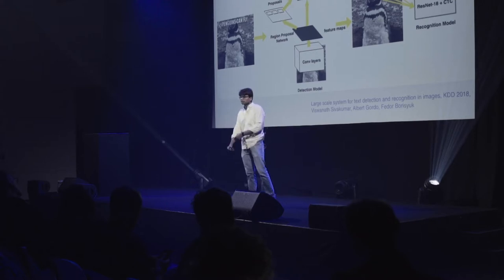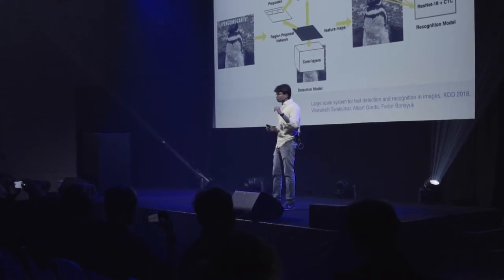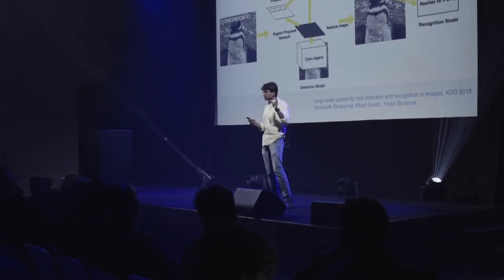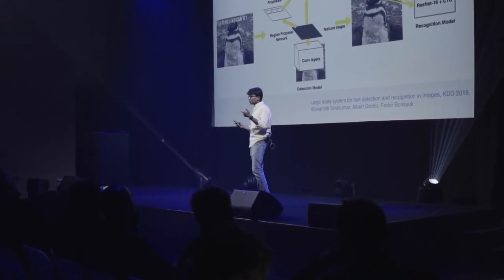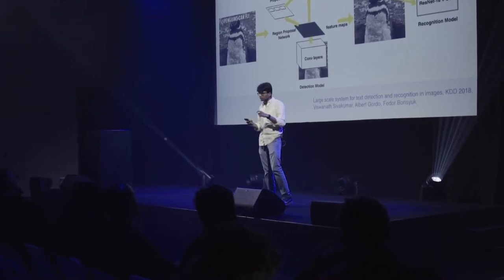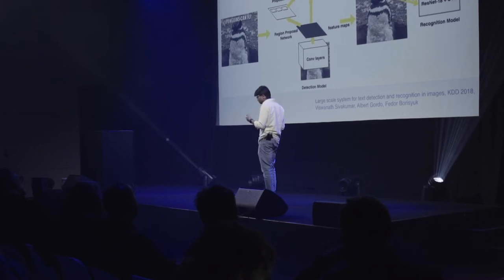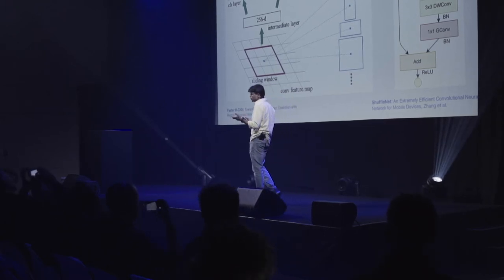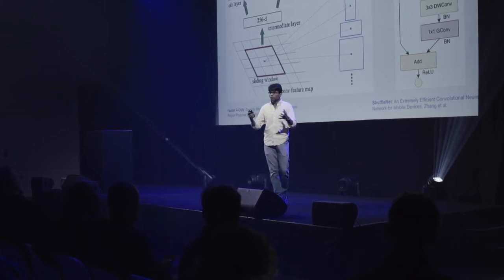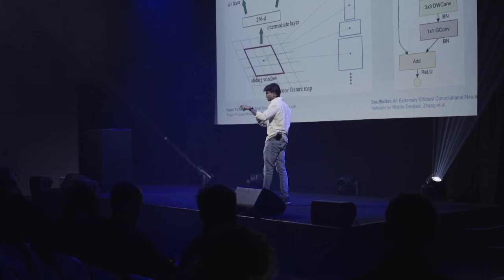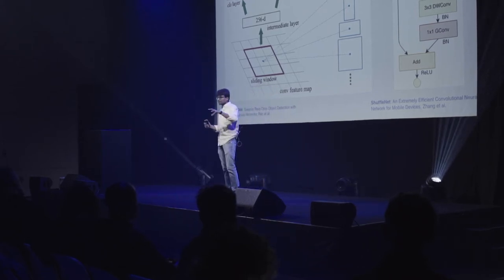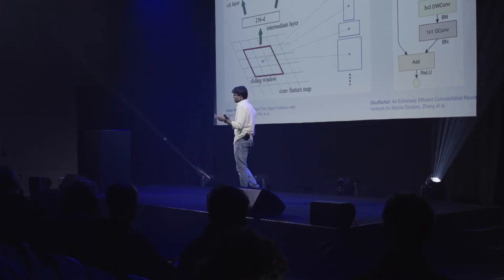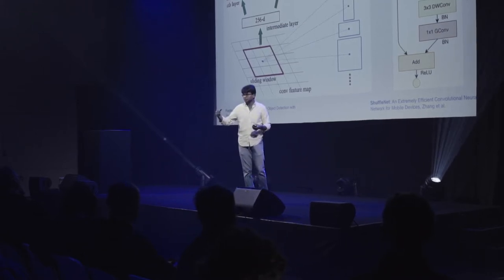Our architecture uses a two-step approach. First, we have a text detection system that takes the image and identifies the locations where the individual words are present. Then it takes each word crop and feeds that into a second model called the text recognition model, which does the actual transcription. The text detection uses Faster R-CNN, which works by having a convolutional neural network extract features, and on top of that feature map it applies a sliding window where at each location it creates anchor boxes with different aspect ratios and sizes, predicting the probability of there being a word at each of those points.